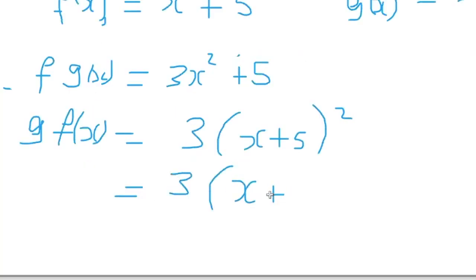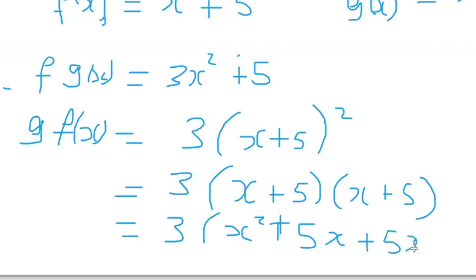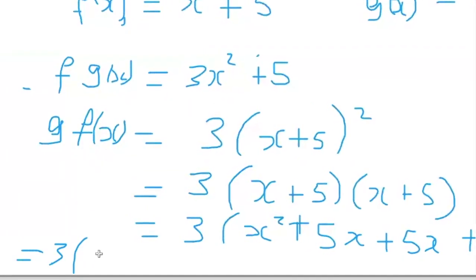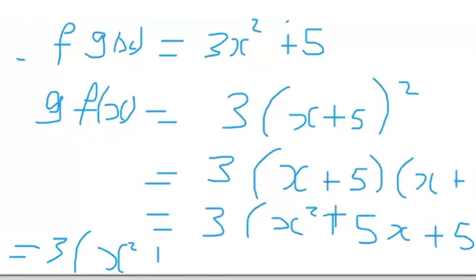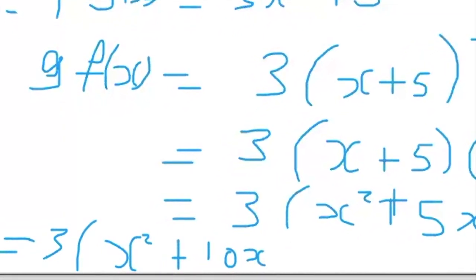So we have (x plus 5) times (x plus 5). So we have x times x, that's x squared; x times 5, that's 5x; 5 times x, that's 5x; and 5 times 5, that's 25. So what we have is x squared plus 5x plus 5x, giving us 10x, plus 25.